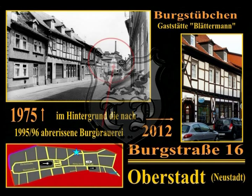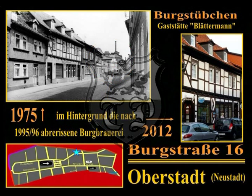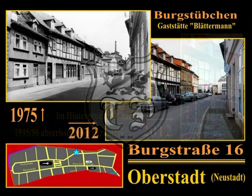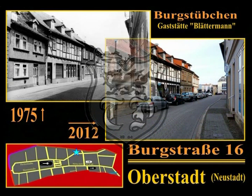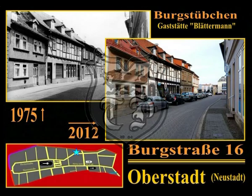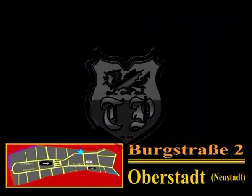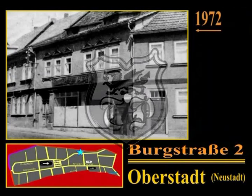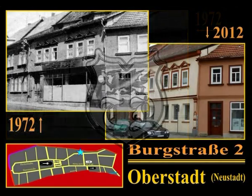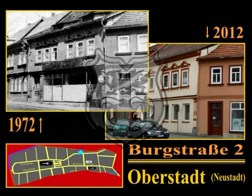Die Aufnahmen stammen aus dem Jahre 1935 und aus dem Jahre 1975. Auf der Aufnahme von 1975 kann man noch im Hintergrund die 1995–96 abgerissene Burgbrauerei sehen; an ihrer Stelle entstand Ende der 1990er Jahre die Burggalerie als innerstädtisches Einkaufszentrum. Die Burgstraße 2 war wohl schon früher ein Geschäftshaus mit Wohnungen in der ersten Etage; der Laden wurde aber schon in den 1970er Jahren nicht mehr genutzt. Ende der 1990er Jahre wurde das Haus umgebaut und saniert und ist heute ein reines Wohnhaus.